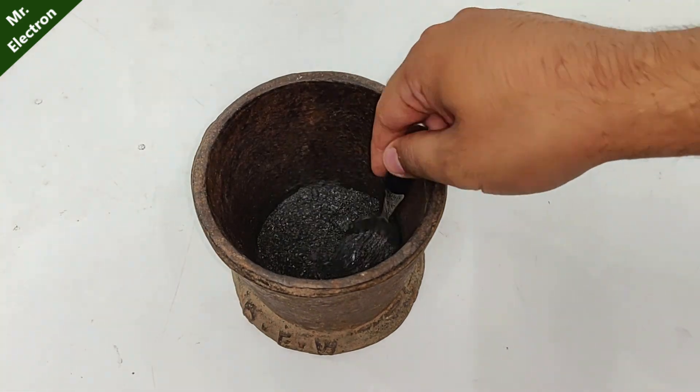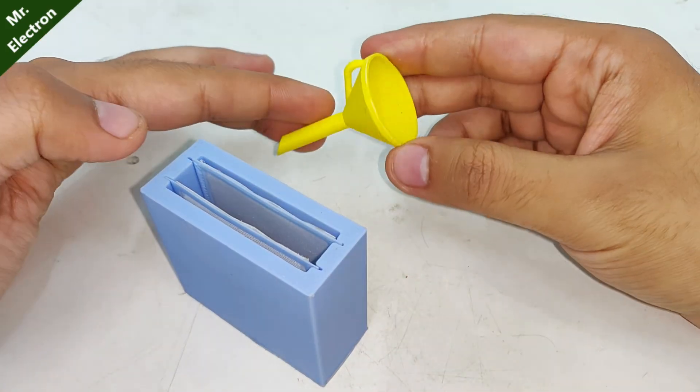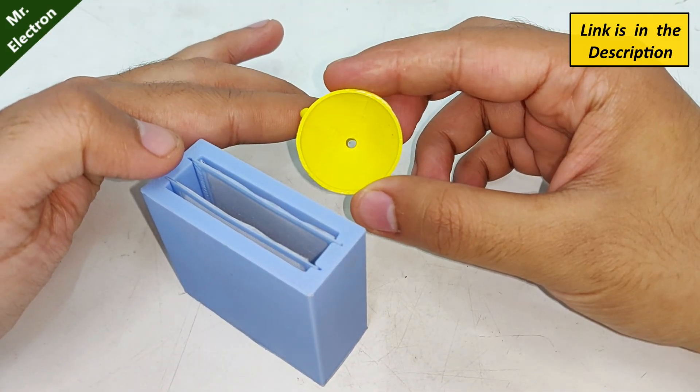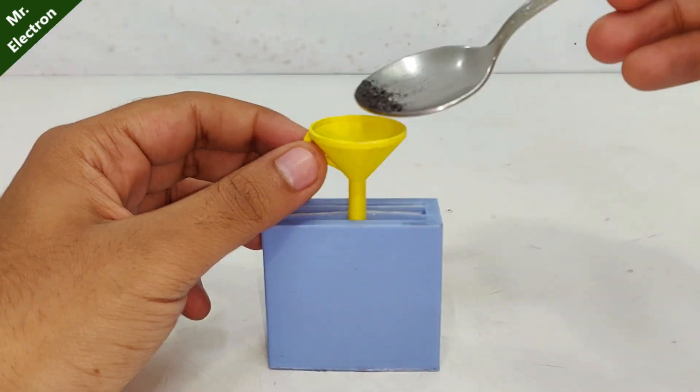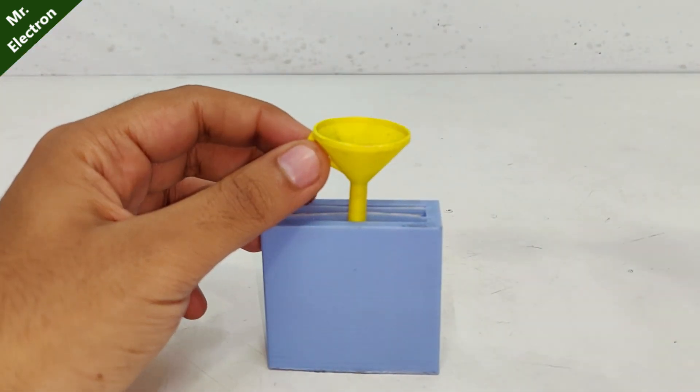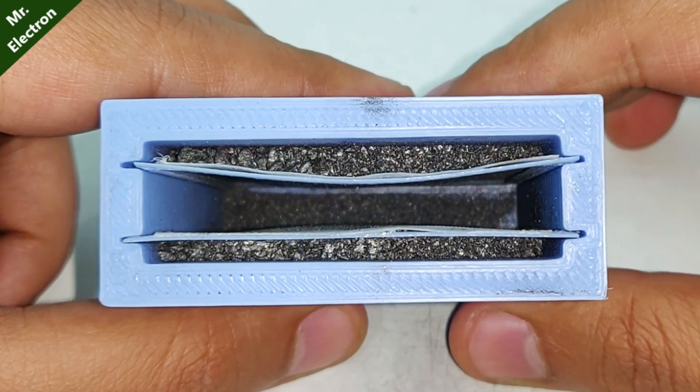Next comes the graphite powder that I have to fill on the sides. I will be using this 3D printed funnel, link for which has been provided in the description. Here you can see that I have filled the side plates of my cell with the graphite powder, although there is some spillage on the middle cell.